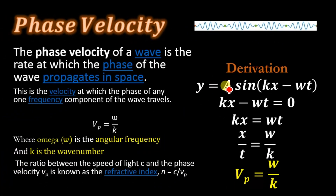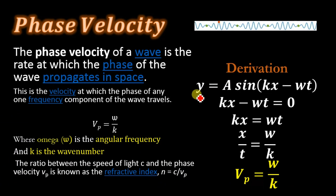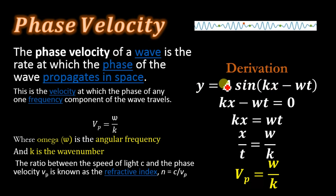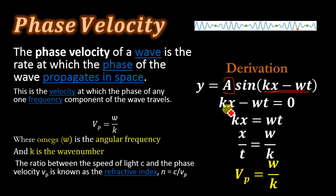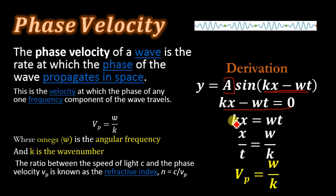Derivation of phase velocity. This is the wave equation: y = A sin(kx − ωt), where A is the amplitude and (kx − ωt) is the phase.